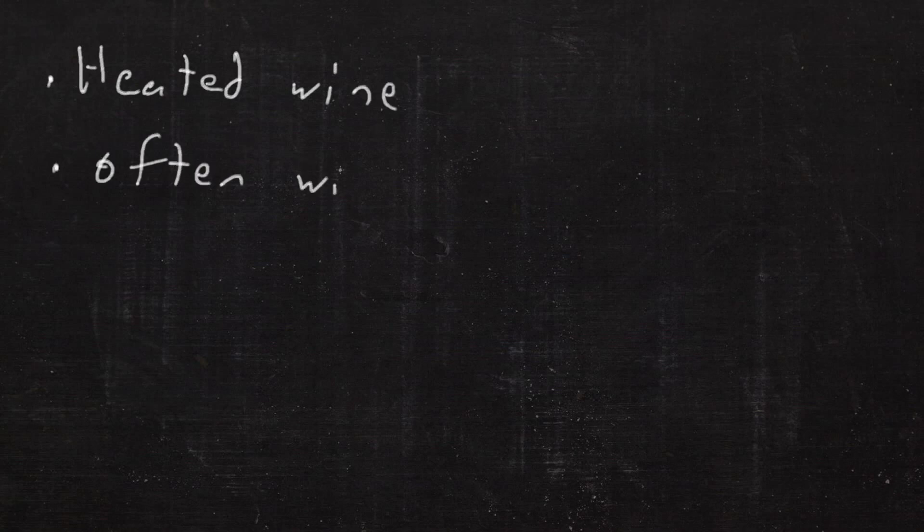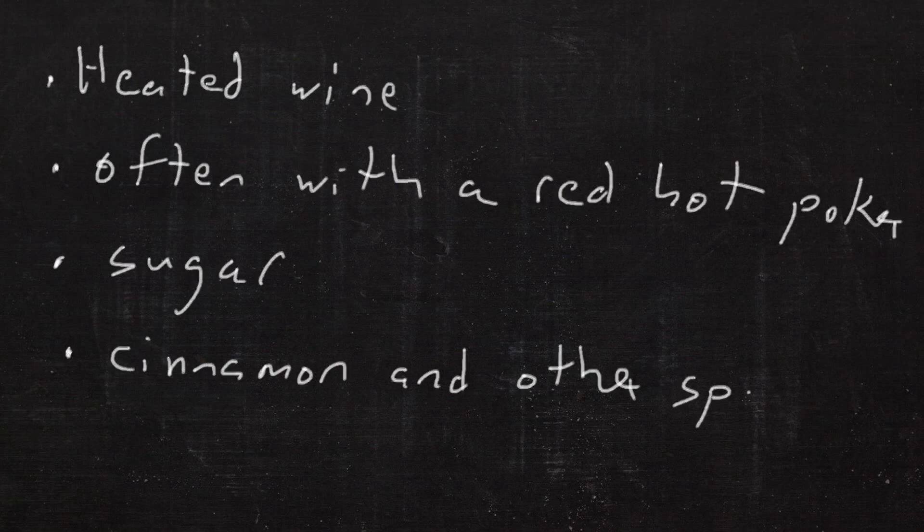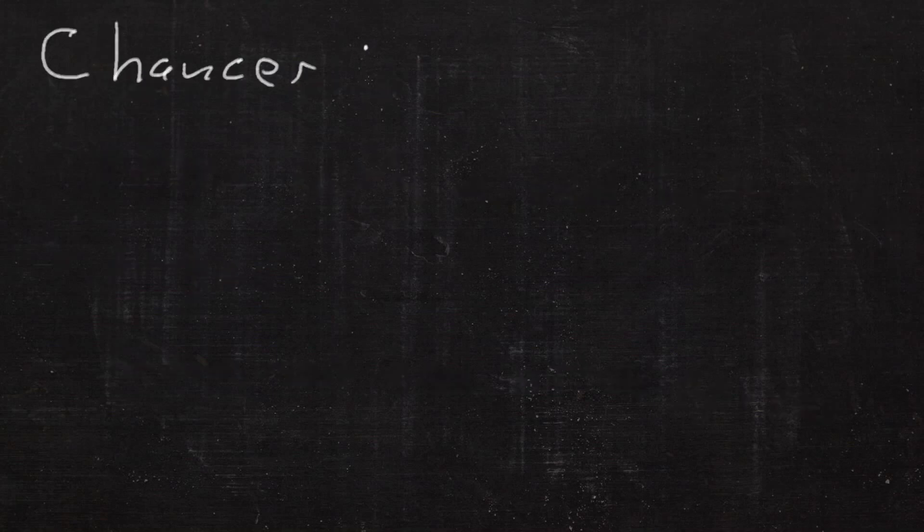It was heated wine, often with a red-hot poker, sugar, cinnamon, and other spices. Chaucer mentioned it in Miller's tale.